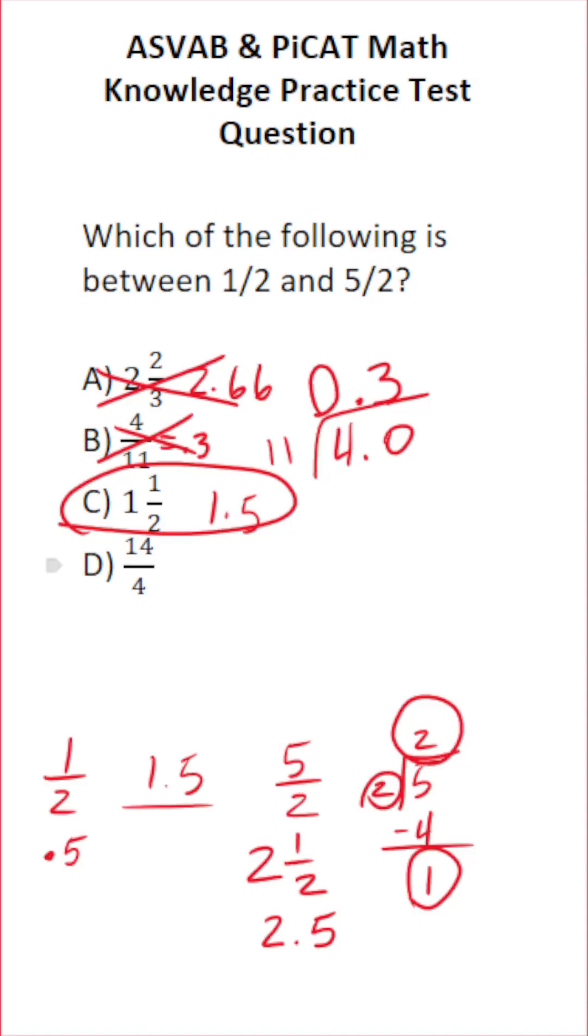Let's quickly check D in case these weren't in this order. We can convert this to a mixed number via long division. 14 divided by 4. 4 goes into 14 three times without going over, given that 4 times 3 is 12. 14 minus 12 is 2.